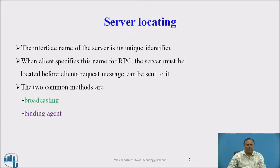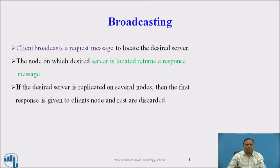Server locating: the interface name of the server is its unique identifier. When the client specifies the name for an RPC, the server must be located before the client's request message can be sent to it. The two common methods are broadcasting and binding agent. Broadcasting means one-to-many — one server and many clients. The client broadcasts a request message to locate the desired server. The node on which the desired server is located returns a response message. If the desired server is replicated on several nodes, the first response is given to the client and the rest are discarded. Broadcasting is easy to implement on small networks.